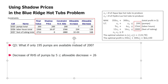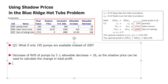We compare the decrease of 5 to the allowable decrease, which is 26. Since 5 is less than or equal to 26, the shadow price can be used to calculate the change in total profit. The total profit will decrease by 5 times the shadow price of $200 per pump — that's $1,000. So 5 pumps times $200 per pump equals $1,000 less in profit.